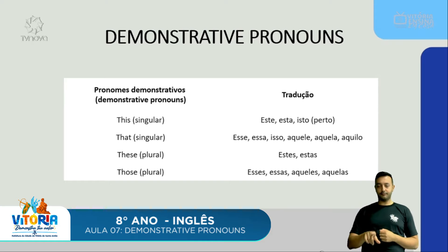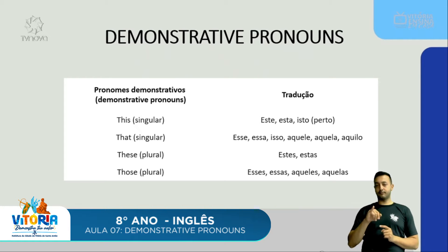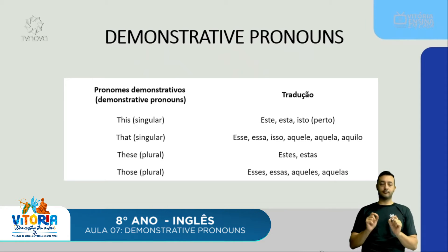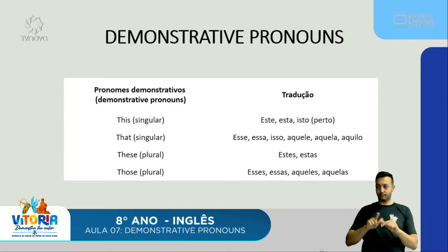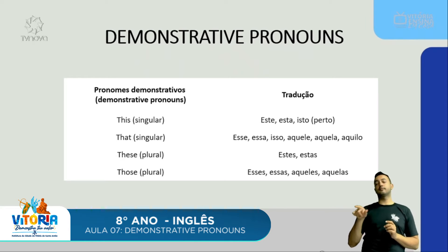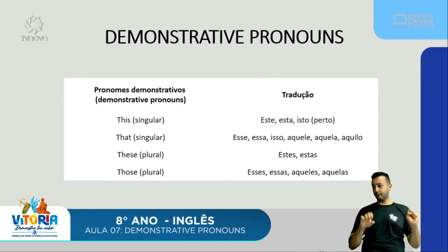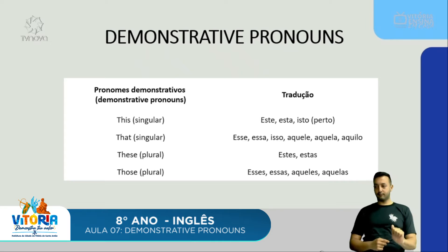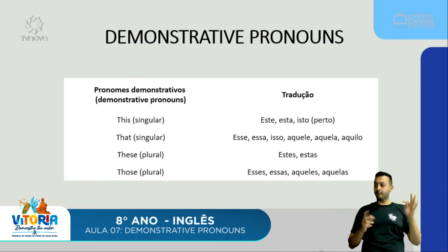Nessa tabela temos a tradução de cada um dos demonstrative pronouns. Temos o 'this', singular, para objetos próximos do interlocutor, que quer dizer este, esta, isto. Temos o 'that', também singular, para objetos distantes do interlocutor, que quer dizer esse, essa, isso, aquele, aquela e aquilo. Temos o 'these', plural do 'this', para objetos próximos, que significa estes ou estas. E temos o 'those', plural do 'that', que quer dizer esses, essas, aqueles ou aquelas.